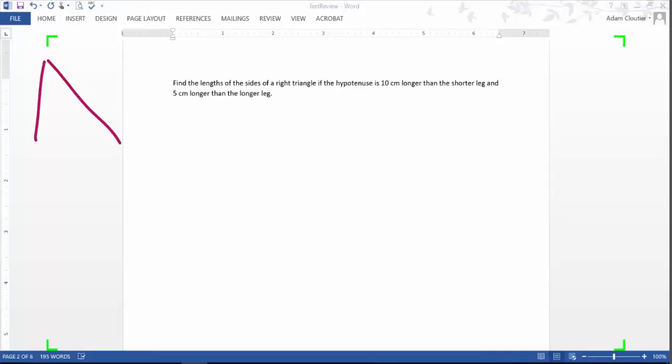Here's my triangle over here. I've got sides A, B, C, where C is the hypotenuse. And it says the hypotenuse is 10 centimeters longer than the shorter leg and 5 centimeters longer than the longer leg.